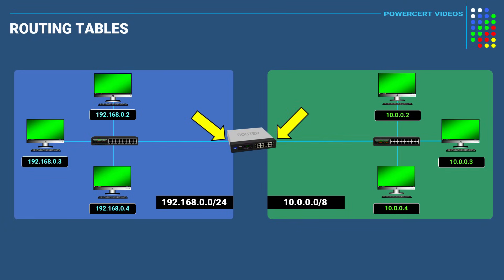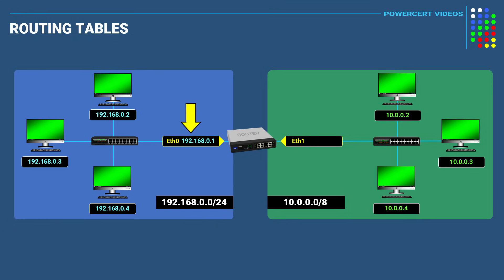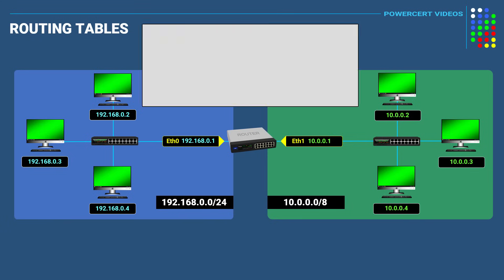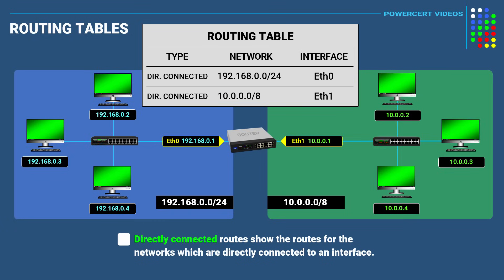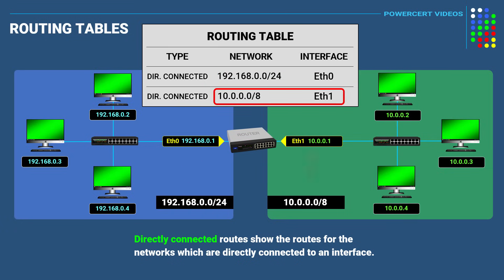This router is using two interfaces. One interface labeled Ethernet 0 is connected to the 192 network, and the other interface labeled Ethernet 1 is connected to the 10 network. We will configure this interface and give it an IP address and subnet mask in the 192 IP address group, and then configure the other interface for the 10 IP address group. When we do this, the router is going to automatically create a routing table with directly connected routes. Directly connected routes show the routes for the networks which are directly connected to an interface. So now if we look at this routing table, it's informing the router that any packet intended for the 192 network will be forwarded out this interface, and likewise, any packet intended for the 10 network will be forwarded out this interface.